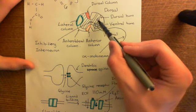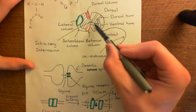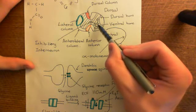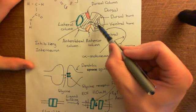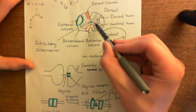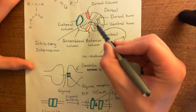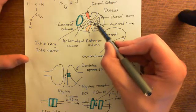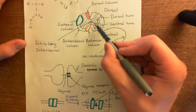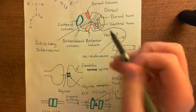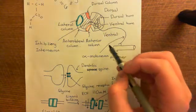If we have this excitatory neuron firing at the same time as this inhibitory neuron, the excitatory neuron will be causing excitatory postsynaptic currents — positively charged ions moving into the cell. If you've got positively charged ions moving in and negatively charged ions moving in, there's the capability that they will neutralize each other, and it will mean that nothing overall happens to this neuron.